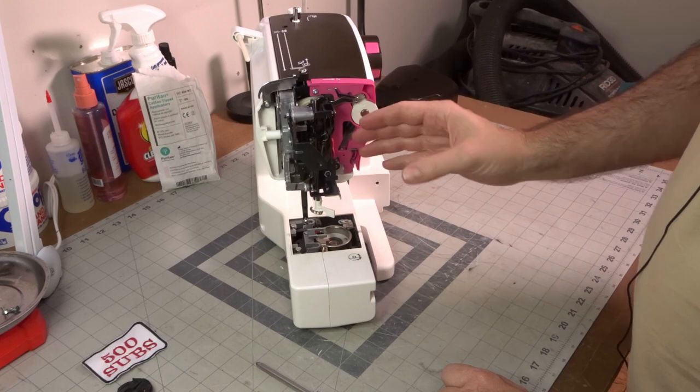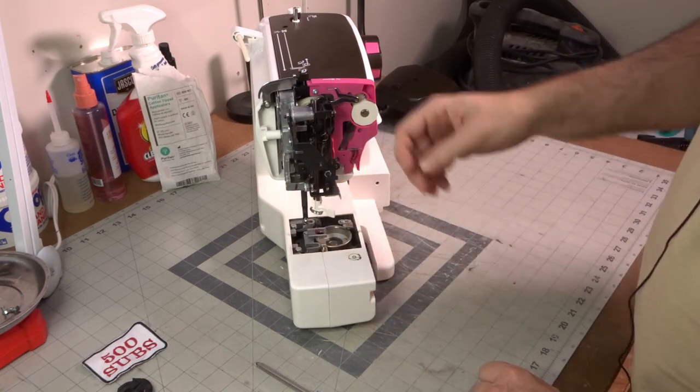You have access to the entire needle bar, which is not something that you typically see in a sewing machine. Typically, that needle bar, you have access to the front or to the side.